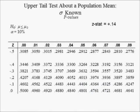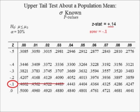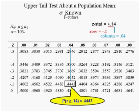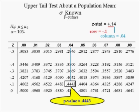Suppose instead the sample data yields a Z statistic equal to 0.14. The value in row negative 0.1 and column 0.04 is 0.4443. Because the standard normal distribution is symmetric, the probability that Z is greater than or equal to a Z-stat of 0.14 is equal to 0.4443. Hence, the P-value is 0.4443.